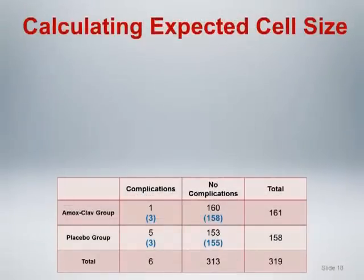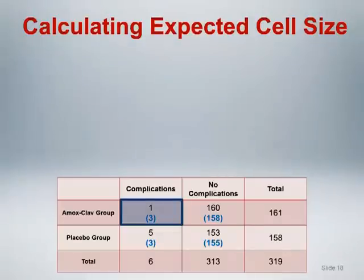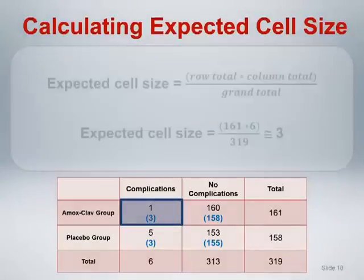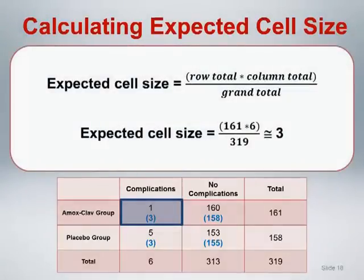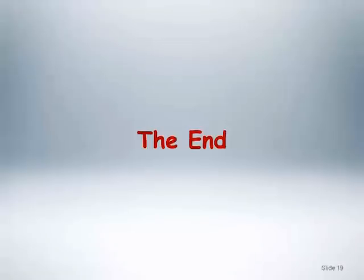The expected cell count is calculated with a simple formula. For the cell corresponding to complications in the Amox-Clav group with an observed count of 1, multiply the row total (161) by the column total (6), then divide by the grand total (319). This yields an expected cell count of approximately 3. This concludes the first segment of our discussion of two-way frequency tables. In the next segment, we will discuss McNemar's test for paired data.